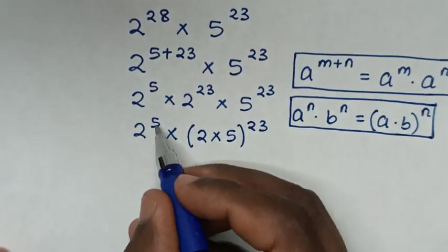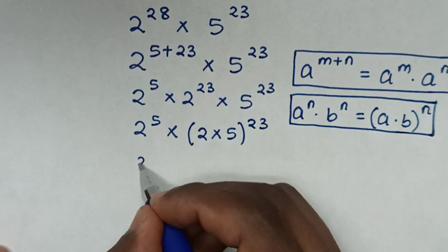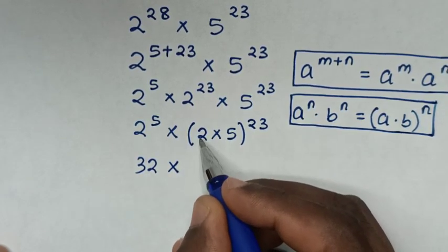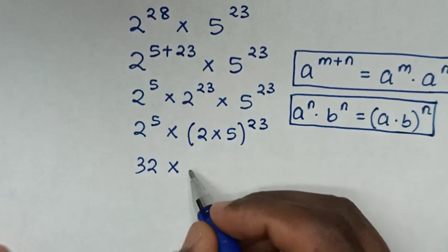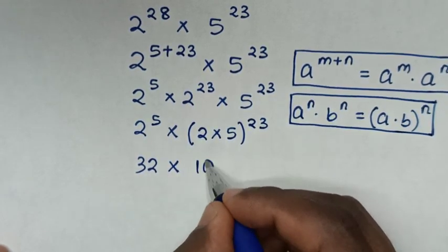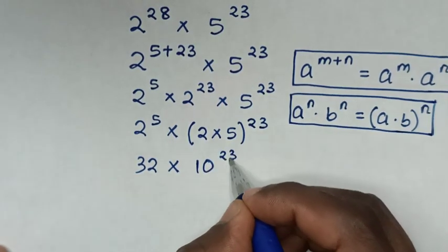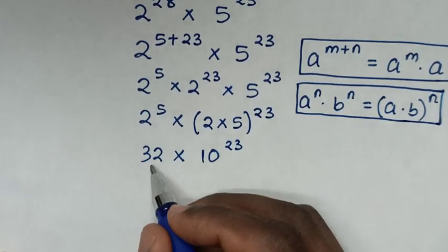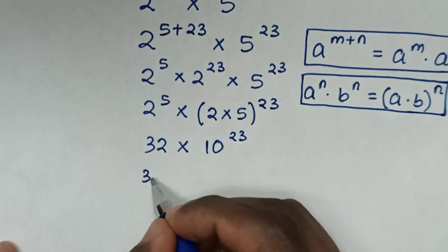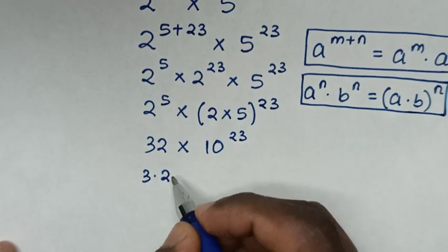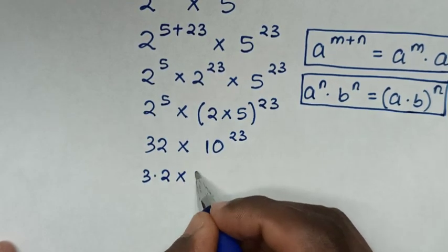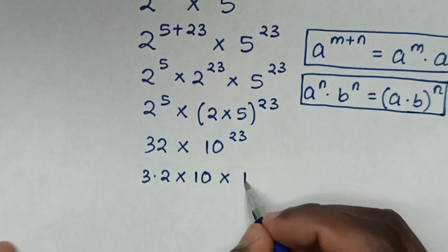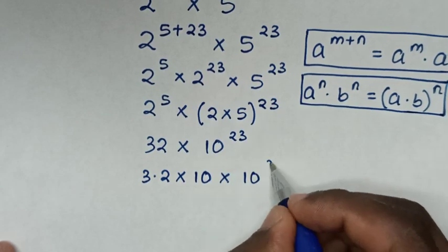Then, 2 to the power of 5 is 32, then times (2 times 5), which is 10, to the power of 23. Now, 32 expressed to one decimal place is 3.2, then times 10, then times 10 to the power of 23.